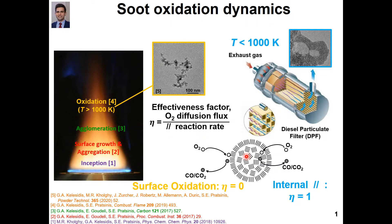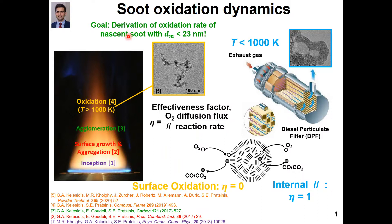Now the oxidation rate of mature soot is rather well known and similar to that of graphite. So it is of particular interest to derive the oxidation rate of small nascent soot nanoparticles that are present in the exhausts of gasoline engines. Of course we can produce small nascent soot nanoparticles using laboratory flame reactors as well.